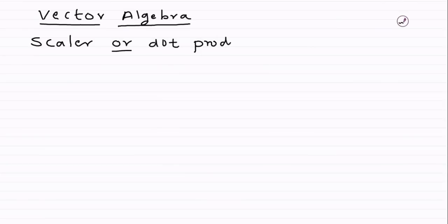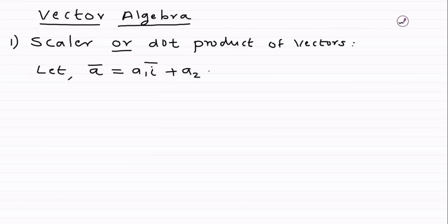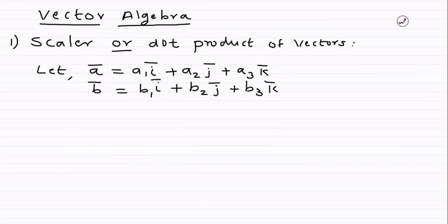Suppose vector a-bar is a1·i + a2·j + a3·k, and vector b-bar is b1·i + b2·j + b3·k. A vector is a physical quantity which has magnitude and direction. i, j, and k are the unit vectors along the X, Y, and Z directions respectively.